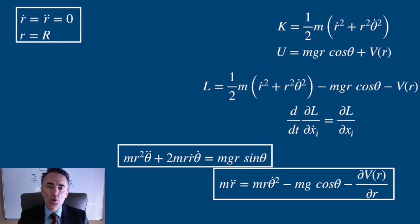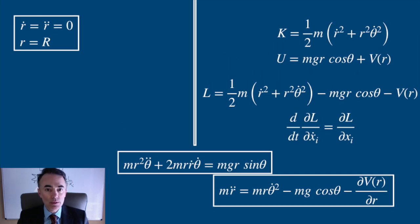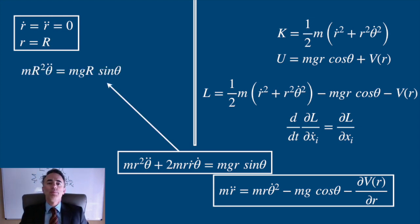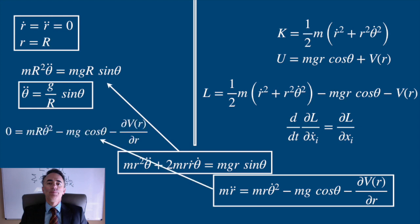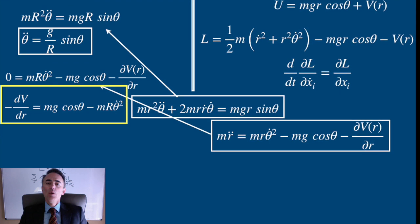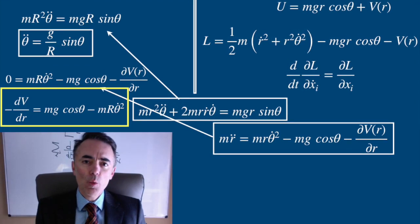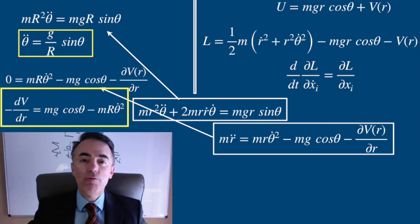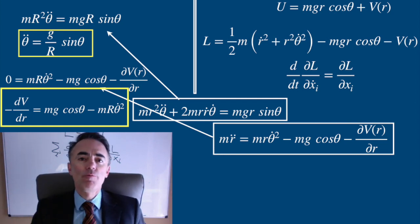With this in mind, I impose that r dot and r two dots are zero and lowercase r is equal to capital R. So I get the following simplifications. With this, the first equation is the tangential equation of motion I found before, the equation of motion for theta.